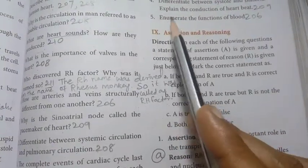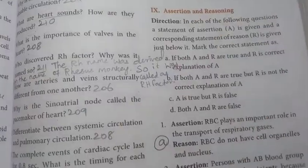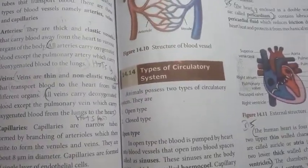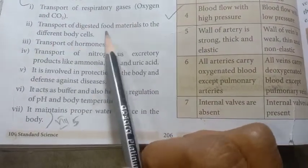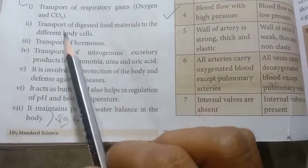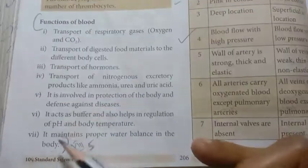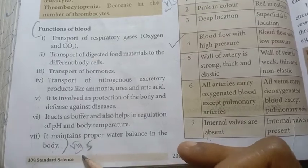Fifth one: enumerate the functions of blood. Page number 206, functions of blood. One of seven points is given: transport of respiratory gases, and transport of digested food materials to different body cells. Cover all seven points. Roman No. 8, fifth answer is complete.